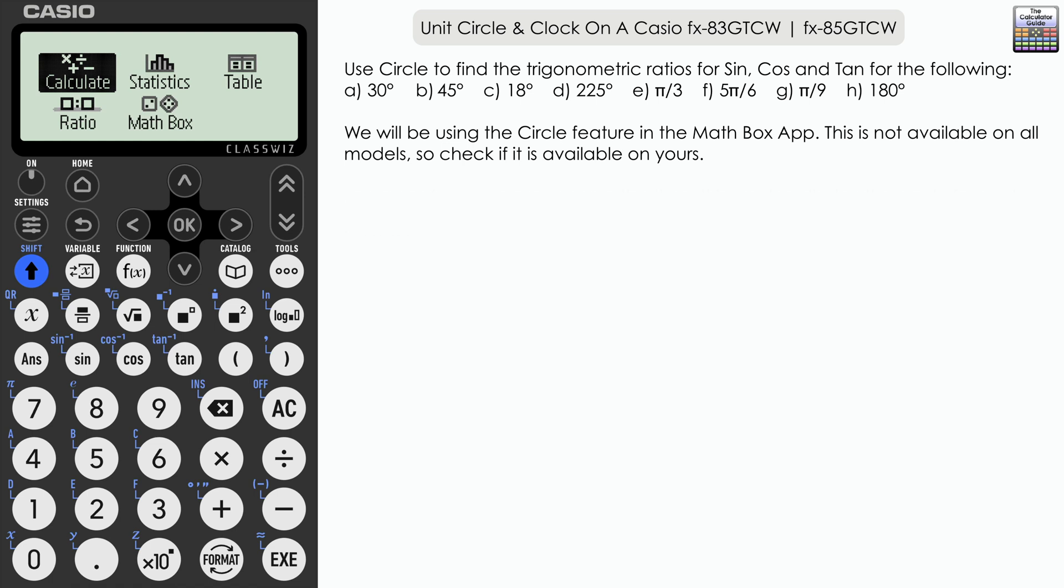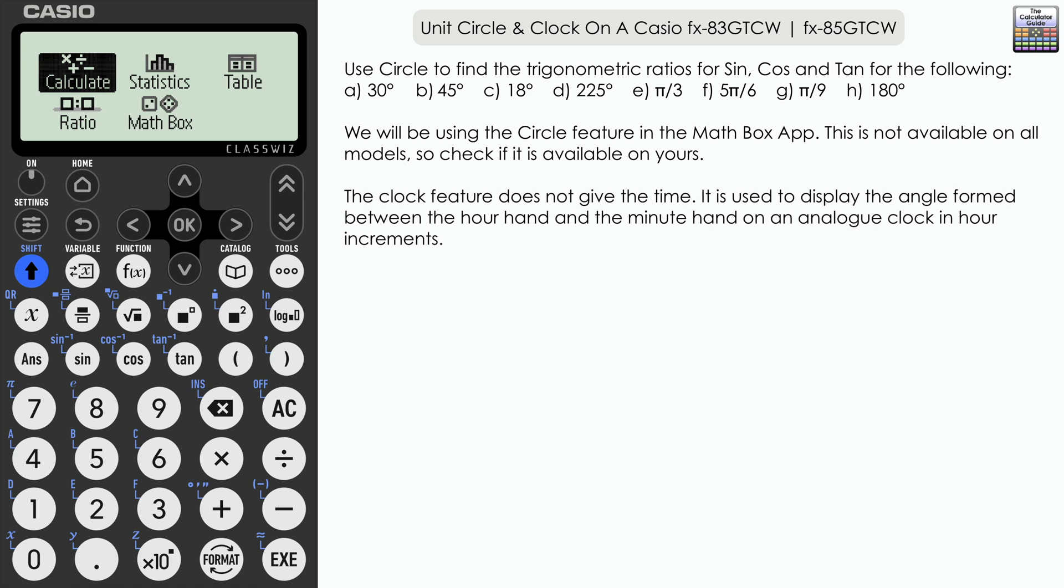Before you start throwing your smartwatches away, the clock feature is not something that's used to tell the time. It is in fact used as a tool to measure the angles formed by the hands of an analog clock, but we will have a look at that a little bit later.